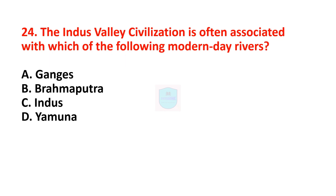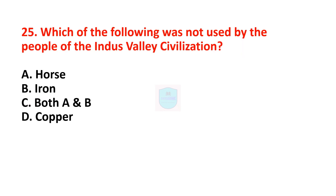Next question: the Indus Valley Civilization is often associated with which modern-day river? Correct answer is the Indus river. Next question: which of the following was not used by the people of the Indus Valley Civilization? Correct answer is option C — both A and B — that is horse and iron. Horse and iron were not used by the people of the Indus Valley Civilization.